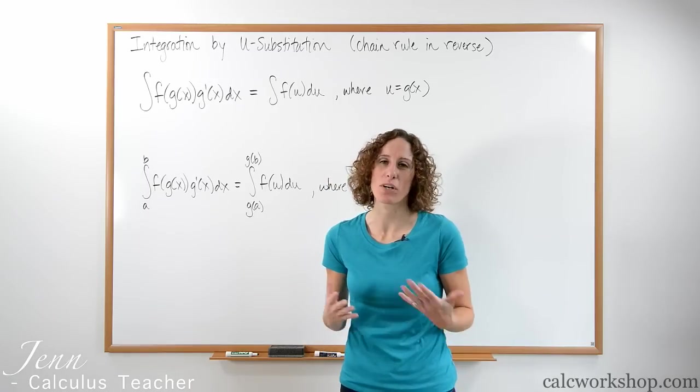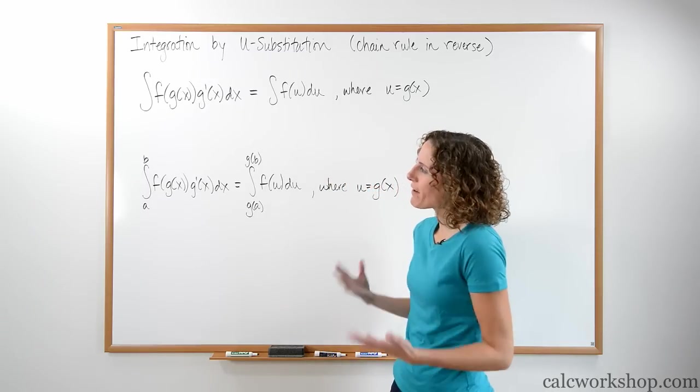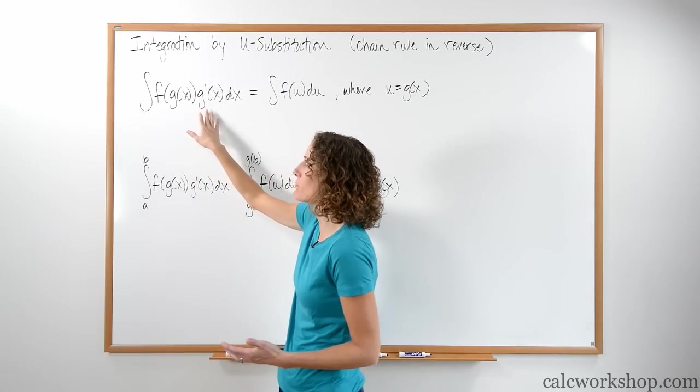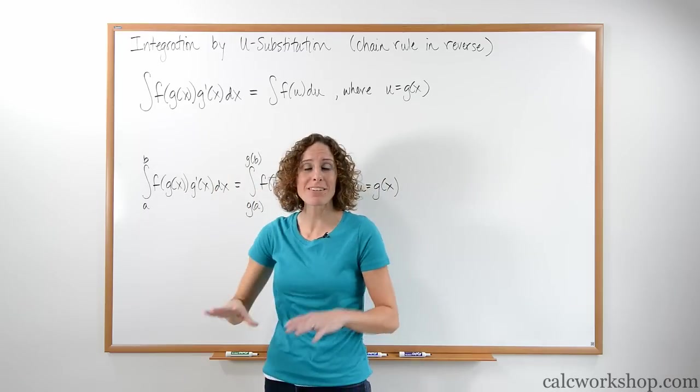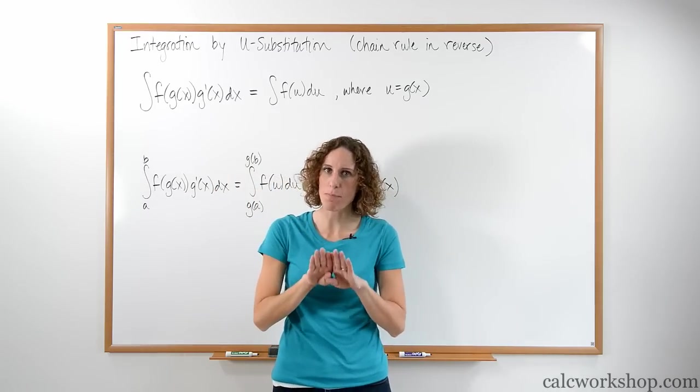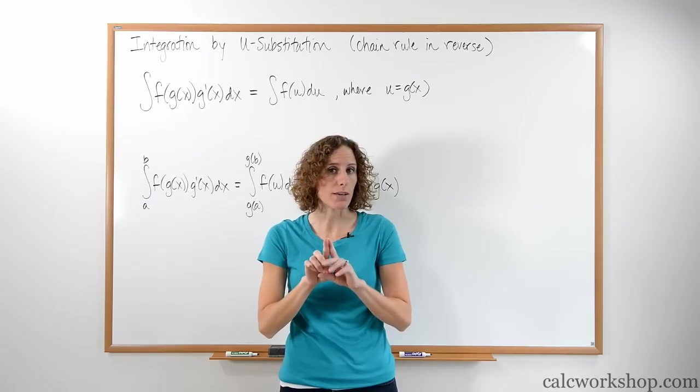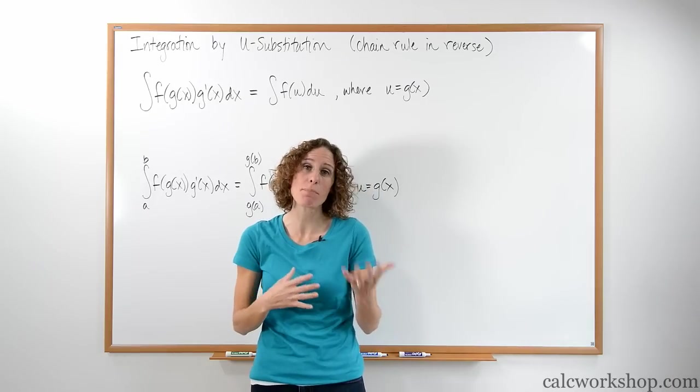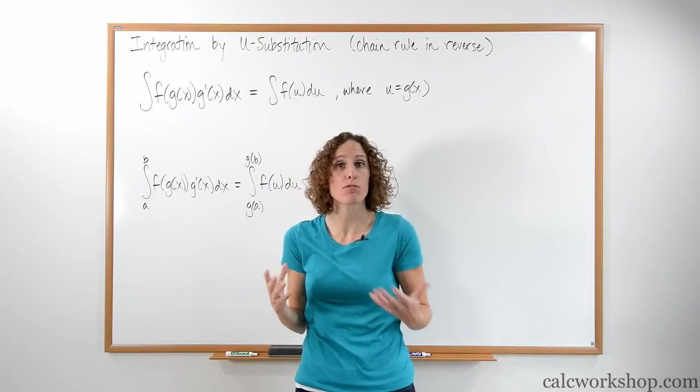Let's look at the type of question that we're going to be utilizing. When we have a question where we have an integral of f of g of x times g prime of x, basically it's two things being multiplied together. But what's curious about these two things being multiplied together is that one is the derivative of the other.